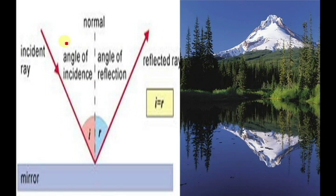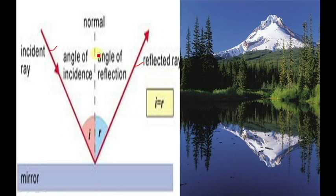Here, this ray is the incident ray and this mirror is the reflecting surface. When the light ray is incident on a mirror or shiny surface, it reflects back in the same medium. This phenomenon is nothing but the reflection of light. For example, this mountain reflection in the water is an example of the reflection phenomenon.